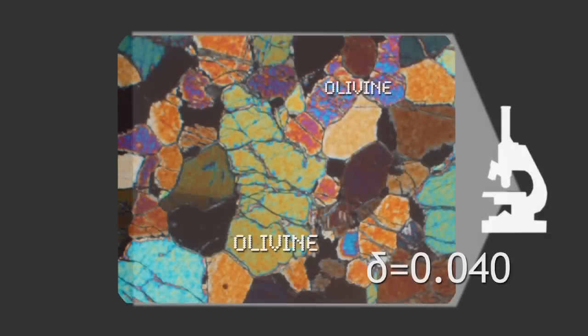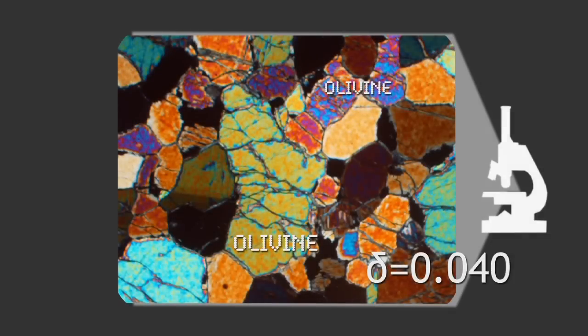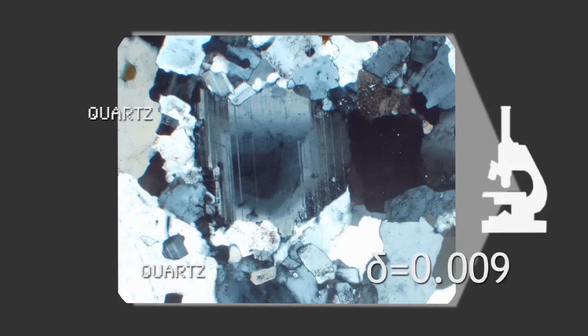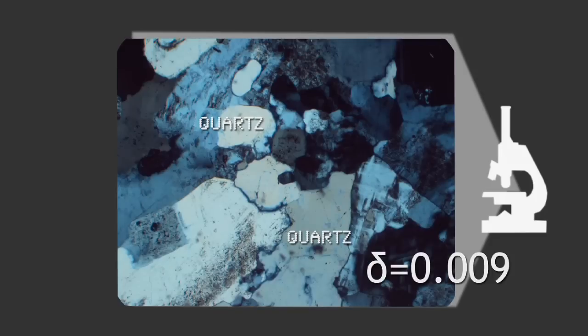Birefringence is the splitting of a single ray of light into two rays when it travels through an anisotropic material. Birefringence is a diagnostic property. The mineral olivine has high birefringence, so its mineral grains display brilliant colors, while quartz produces first-order grays because it has low birefringence.